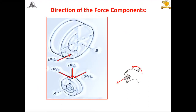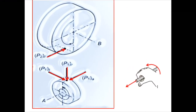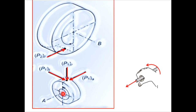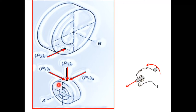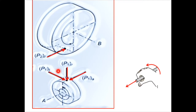Now let us see how to decide the direction of the force components. In this figure, the small gear is the worm and the larger one is the worm wheel or worm gear. A is the position of the observer. From this, you will find the worm rotates in anti-clockwise direction. Like spur and helical gears, the tangential component of the worm, as the input driving element, P1T acts in the opposite direction to the rotation.